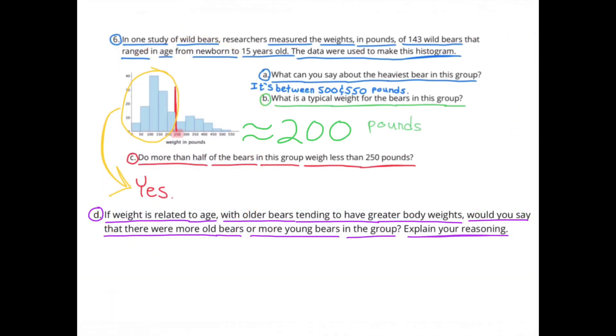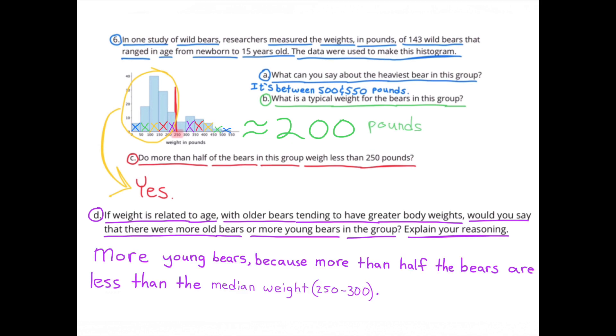If weight is related to age, with older bears tending to have greater body weights, would you say that there were more old bears or more young bears in the group? Explain your reasoning. There would be more young bears in the group because more than half the bears are less than the median weight of 250 to 300 pounds.